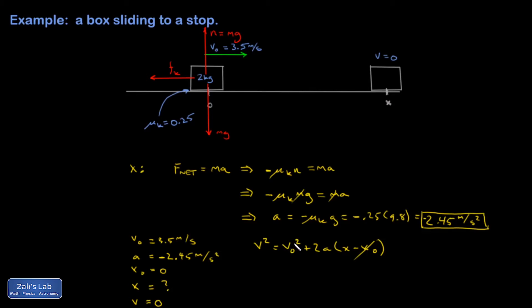My initial x is 0. My final velocity is 0. So I end up with 0 equals V0 squared plus 2Ax, which means that x is negative V0 squared over 2A.